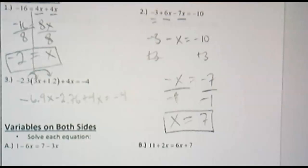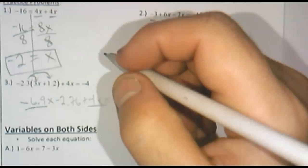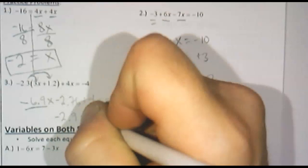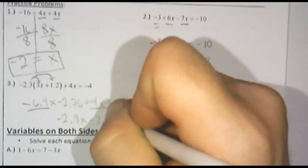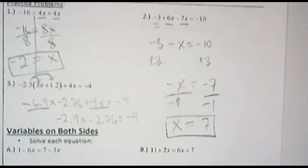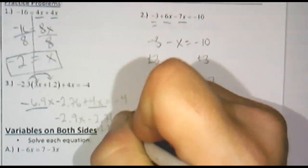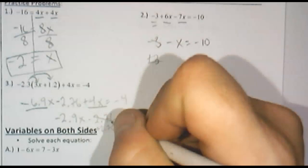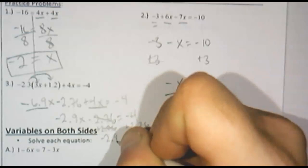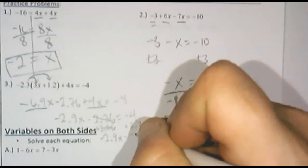We do have some like terms here. Negative 6.9x and 4x. Again, continuing to follow the steps here. 4 minus 6.9 is negative 2.9x. Minus 2.76 should come down. Come along for the ride. Minus 4 comes along. Now I'm going to add 2.76 to both sides. And let's see what that is. Negative 4 plus 2.76. This will cancel. Bring down a negative 2.9x. And negative 4 plus 2.76. That's negative 1.24.